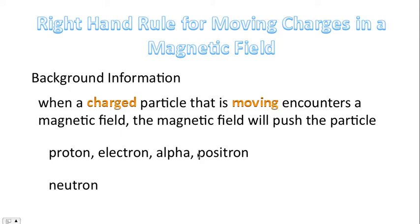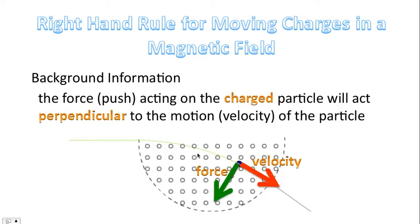What about a neutron? Well, a neutron is not charged, therefore it'll experience no force, no push, in a magnetic field. The force or the push acting on the charged particle will act perpendicular to the motion, to the velocity of the particle. So as you can see in this diagram, if the particle is heading in this direction, then the force is at a 90 degree angle with respect to it.